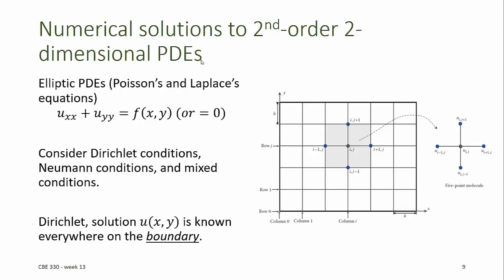In this video, we'll look at second-order two-dimensional PDEs, like elliptic PDEs that include Poisson's and Laplace's equation. For Poisson's equation, the elliptic PDE takes this form, where f can be any function of the independent variables x and y. For Laplace's equation, f is equal to zero.